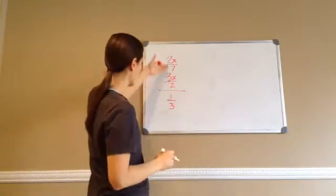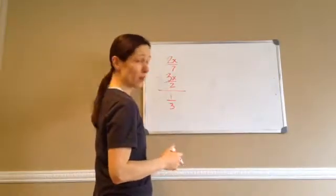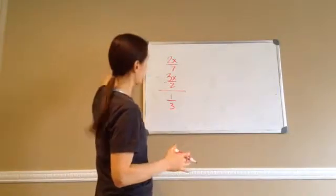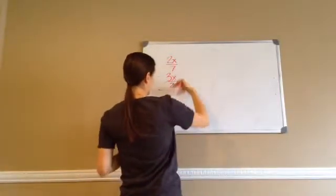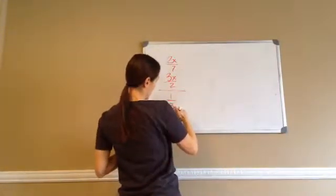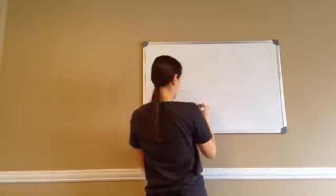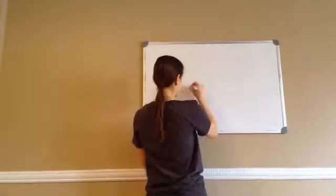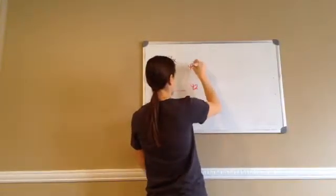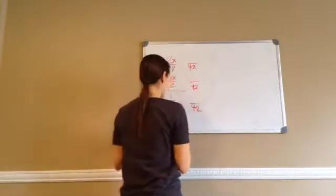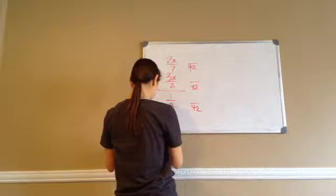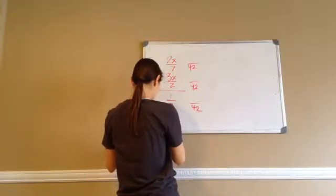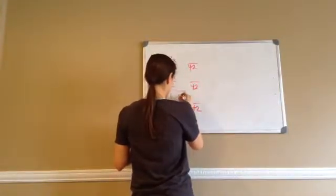Sometimes it's hard to come up with a common denominator. Most of the time if you can't come up with an easy one, you're just going to multiply. So 7 times 3 is 21, and 21 times 2 is 42. That's a big denominator, but that's okay. So 3 times what goes into 42? — 14. So times 14; I have to multiply them both by 14.